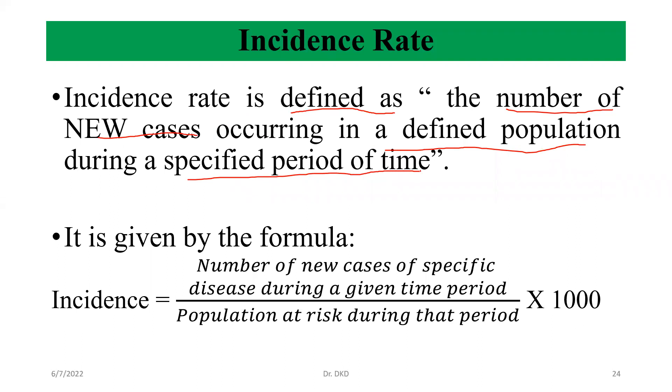We can calculate with help of the formula. Incidence can be calculated: number of new cases of specific disease during a given time period divided by population at risk during that period, multiplied by 1000. With help of this formula, we can calculate incidence rate.